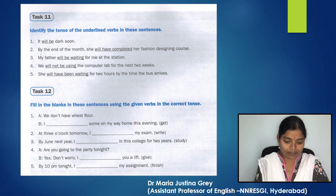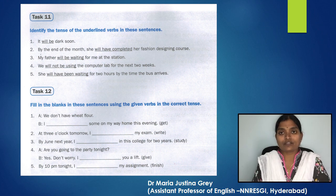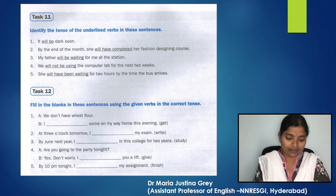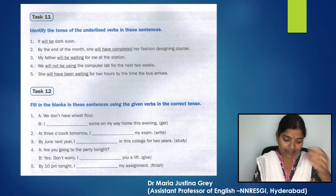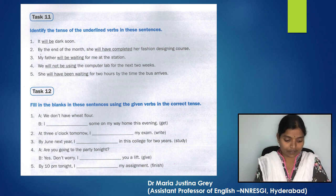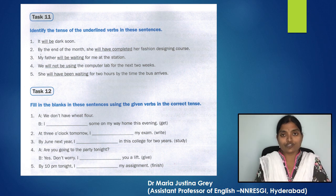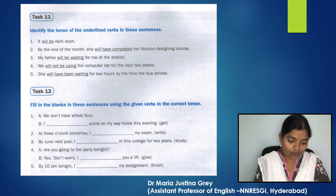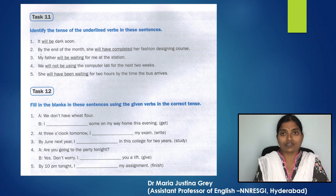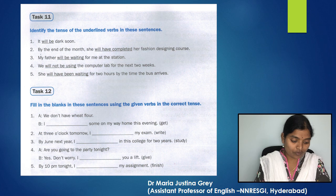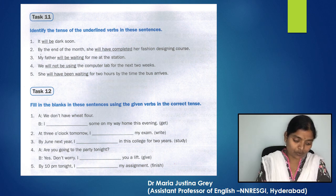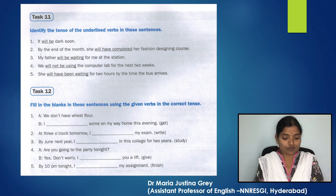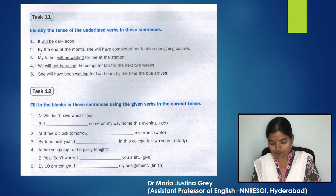Let's do Task 11. Please pause the video, do the task, and then we will discuss the answers. Identify the tense of the underlined verbs. Number 1: 'It will be dark soon.' — Future simple. Number 2: 'By the end of the month, she will have completed her fashion designing course.' — Future perfect. Number 3: 'My father will be waiting for me at the station.' — Future continuous. Number 4: 'We will not be using the computer lab for the next two years.' — Future continuous. Number 5: 'She will have been waiting for two hours by the time the bus arrives.' — Future perfect continuous.